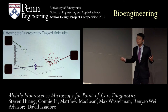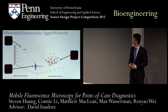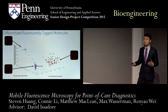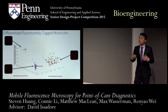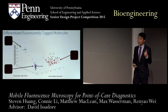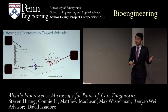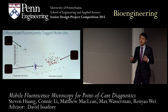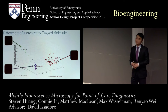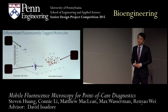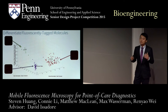Why does multiple color detection matter? HIV-infected patients often concurrently develop tuberculosis and PCP, a type of pneumonia. With multiple color detection, one patient sample can be stained with two different fluorescent stains — say green and blue — and our device can detect and diagnose both infections from a single sample. This greatly expands the applications of our device.